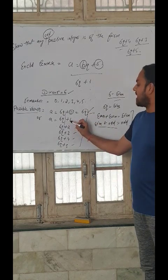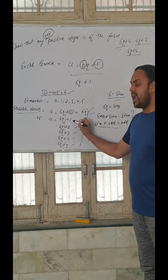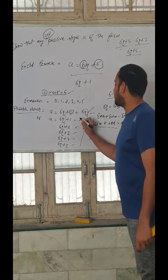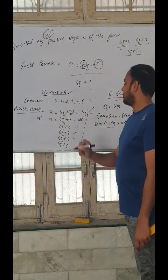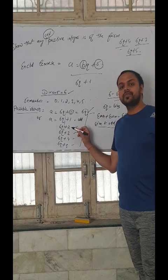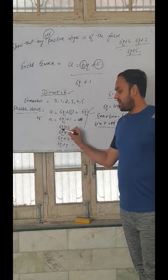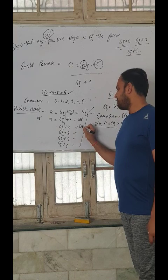6q plus 1 - 6q is even, so what is the result of even plus 1? Odd. Next, 6q plus 2 - 6q is even, even plus 2, what is the result? Even.